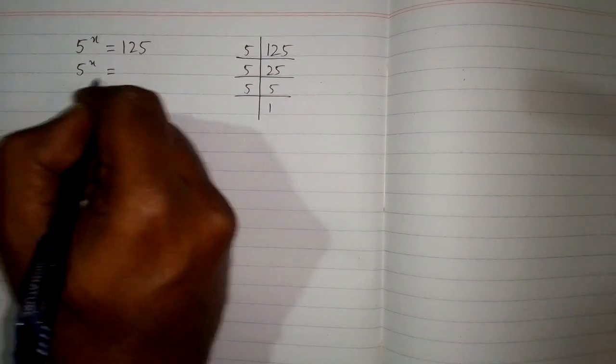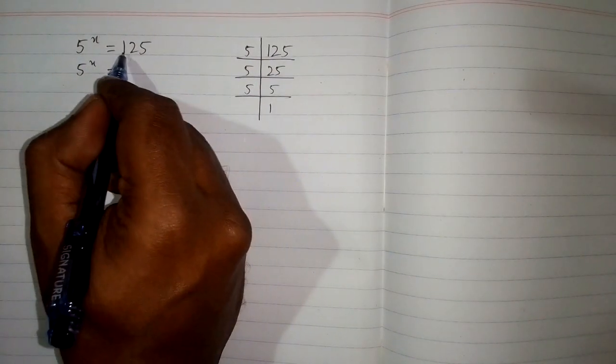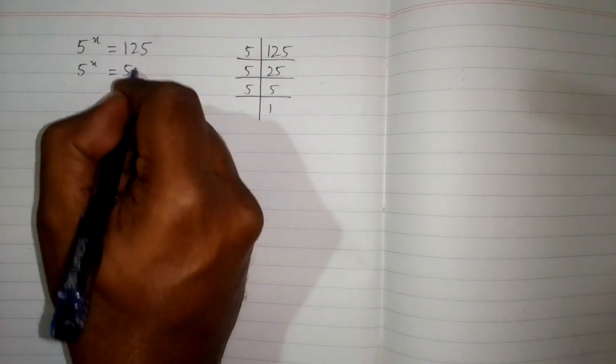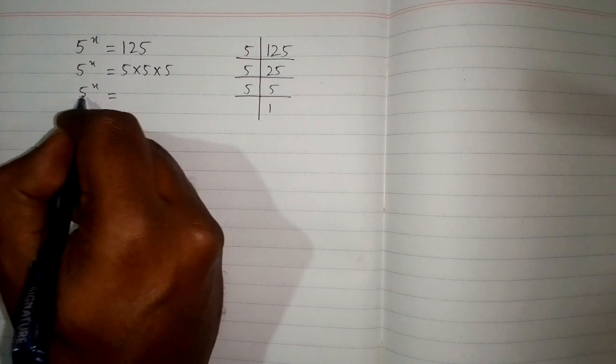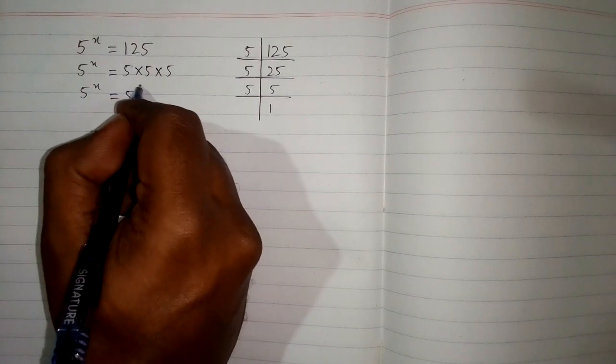So 5 raised to the power x equals 125 can be written as 5 multiplied by 5 multiplied by 5. So we have 5 raised to the power x is equal to 5 raised to the power 3.